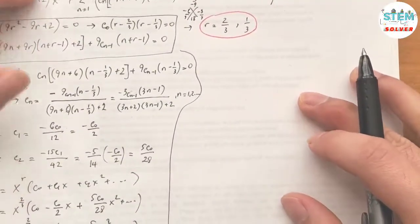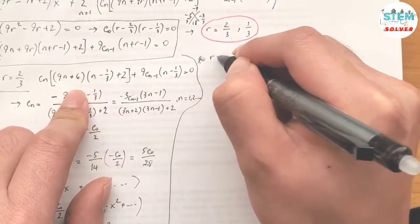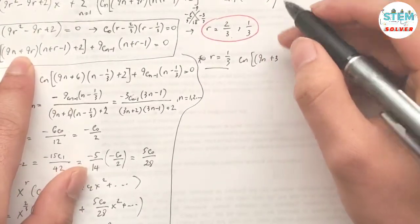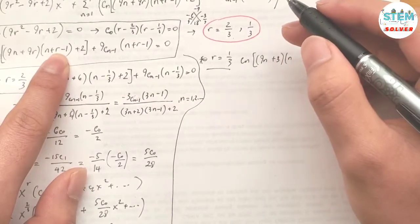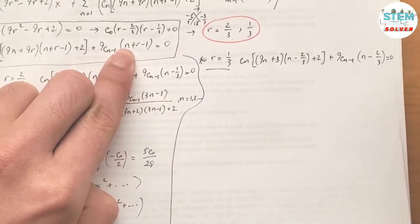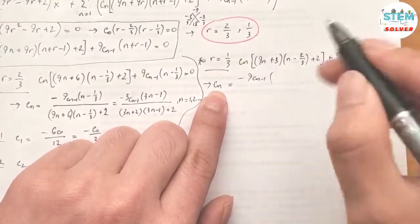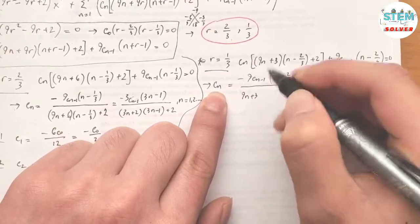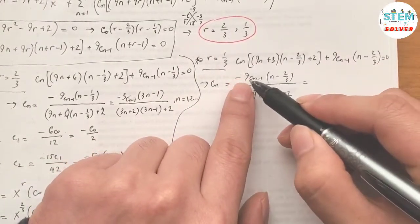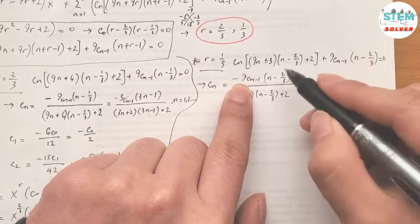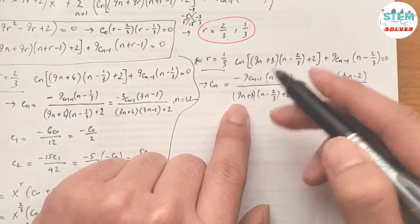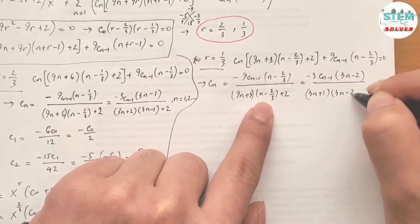Now we do the same for r = 1/3. Plugging into the recurrence: cₙ(9n + 3)(n + 1/3 − 1) + 2 + 9cₙ₋₁(n − 2/3) = 0. Solving for cₙ: cₙ = −9cₙ₋₁(n − 2/3) / [(9n + 3)(n − 2/3) + 2]. Multiplying through by 3 to clear fractions gives cₙ = −3cₙ₋₁(3n − 2) / [(3n + 1)(3n − 2) + 2].